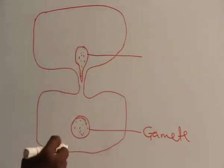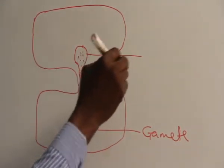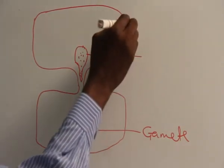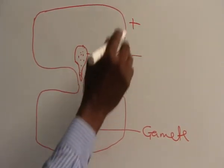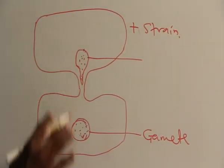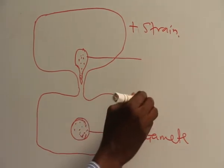This is a passive gamete, and this one becomes active gamete. So this one becomes the positive strain of this organism.